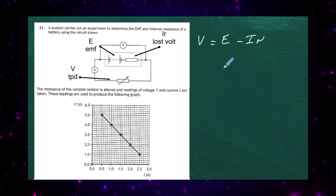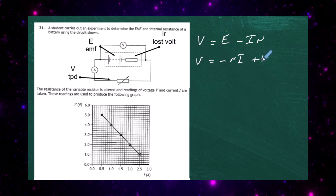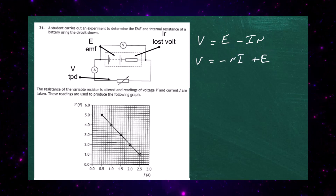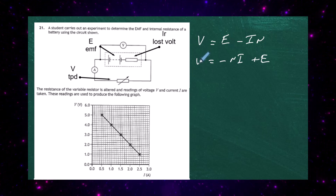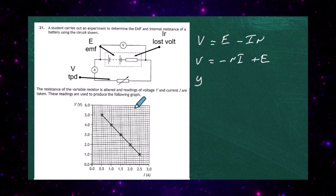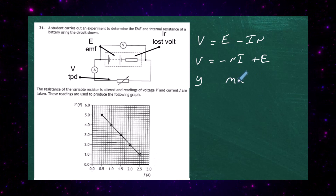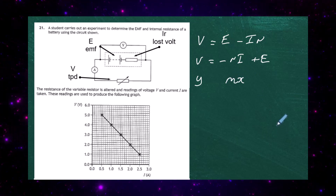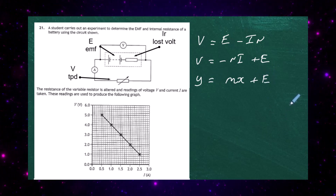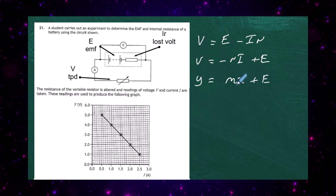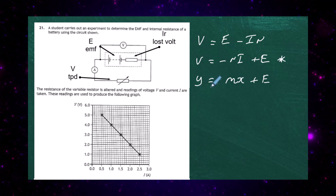We can rearrange that equation into the form V equals minus RI plus E, which is very much like the equation of a straight line. V is the y-axis, I is the x-axis, so the gradient M equals minus the internal resistance R, and where the graph cuts the y-axis — when x is zero — gives us the EMF E. That's why I've put it in the form y equals mx plus E.